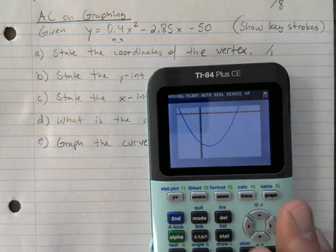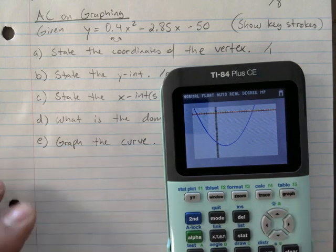So I keep adjusting till I see all the intercepts and the vertex. So that's a pretty good window there. And so we're going to find the vertex. It's a min, right?